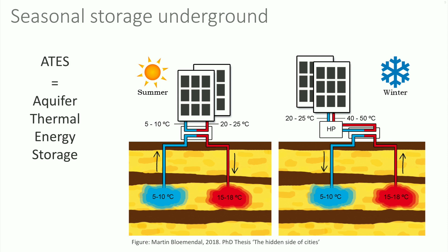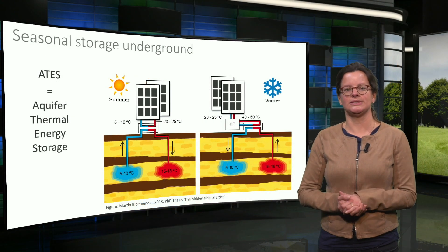In winter, the reverse happens. Warm water from the warm well is extracted to be used for heating the building. Since the water stored usually has a maximum temperature of 25 degrees, a heat pump is used to further upgrade the temperature. The cooled groundwater is injected in the cold well again. On an annual basis, the heat and cold extracted must be in balance.